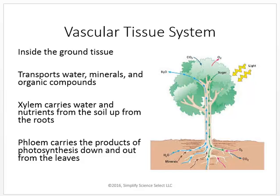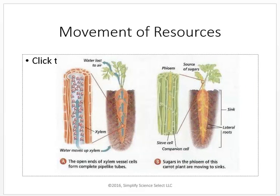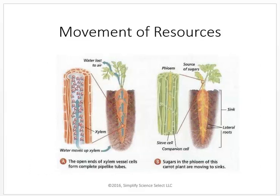Inside the ground tissue, we find the vascular tissue system, which transports water, minerals, and organic compounds. Our two vascular tissues are xylem and phloem. Xylem carries water and nutrients from the soil up from the roots. Phloem carries products of photosynthesis, like sugars or organic molecules, down and out from the leaves — they go in opposite directions, distributing everything where it needs to go.